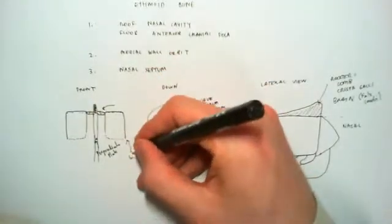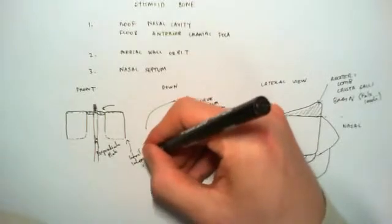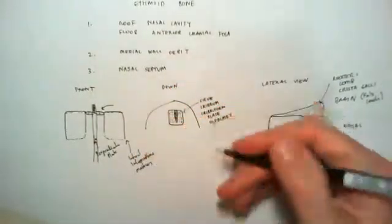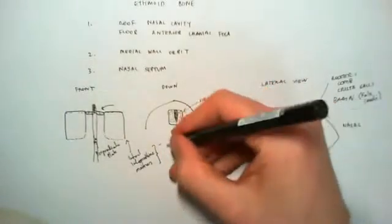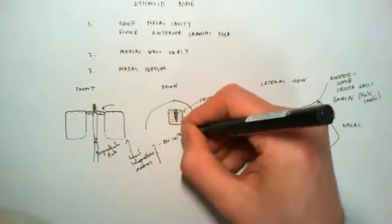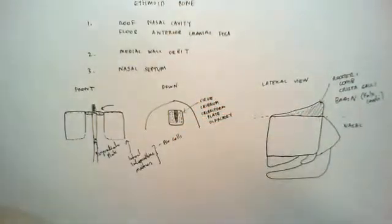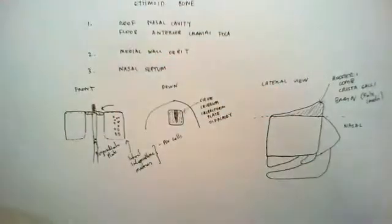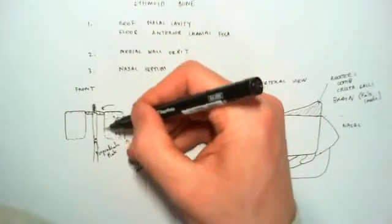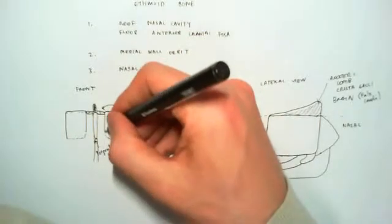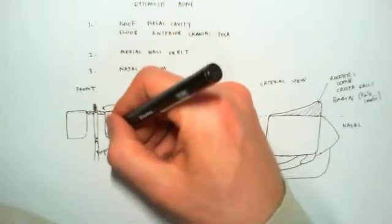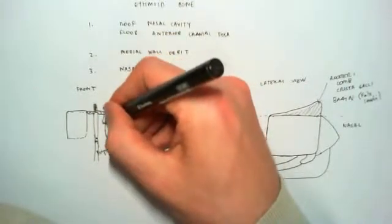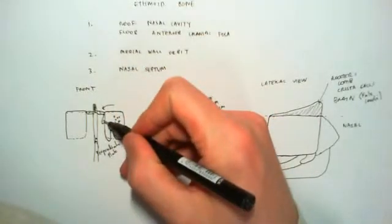So, then we've got these lateral or labyrinthine masses. Now, they are basically composed of, I'm going to make this neat, they are composed of air cells, pneumatized cells, air cells. And so, they're very, very light. The bits of bone are basically paper thin, very, very thin. And the air cells are a little bit more lateral than two other structures.